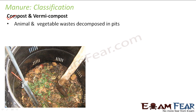Compost looks somewhat like this — all kinds of plant and animal wastes are put together in a pit, which is a well-like structure dug in the ground, or sometimes in a container. Decomposition happens there and it forms compost. The process is known as composting. Compost is rich in organic matter and nutrients, since it is made from animal and plant waste.